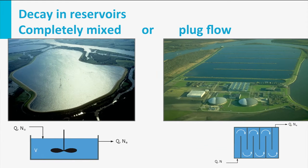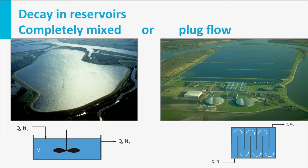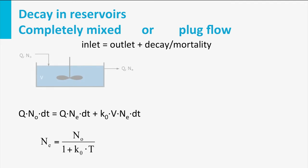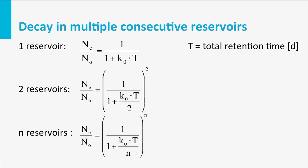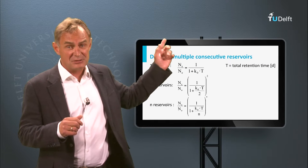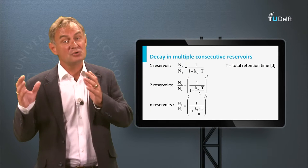In order to be able to calculate, for example, the decay of pathogenic microorganisms, it is necessary to determine if a reservoir can be considered to be completely mixed or in plug flow condition. Completely mixed reservoirs are less efficient in the removal of pathogenic microorganisms than plug flow reactors, as can be concluded from the equations. Several completely mixed reactors in series, however, will approach the efficiency of a plug flow. To understand these equations, please do the exercises.